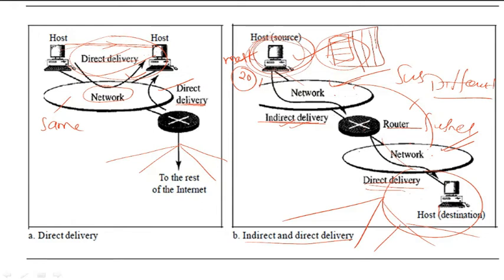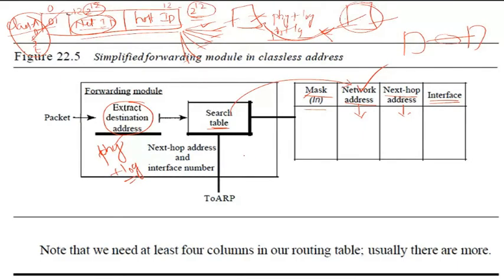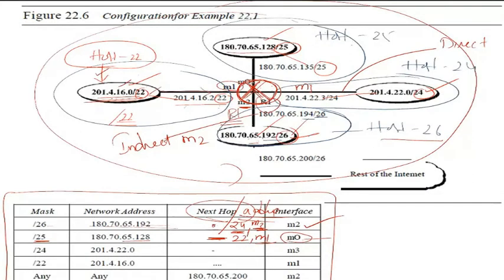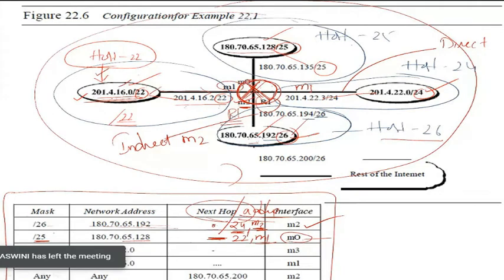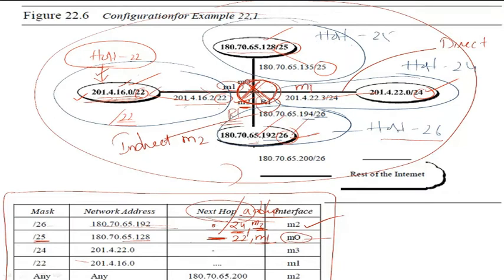The packet transfer to the desired destination is decided based on a routing table. This table is maintained at every host and router. Based on this predefined table, the packet is delivered from one host to another through some interfaces or router devices.